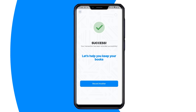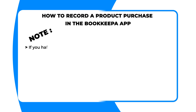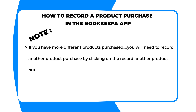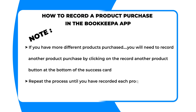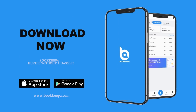Then click on the record purchase button at the bottom of the product purchase card. Finally, you will see a success message confirming that your product purchase transaction has been recorded successfully. Please note, if you have multiple different products purchased, you will need to record another product purchase by clicking on the record another product button at the bottom of the success card. Repeat the process until you have recorded each product purchase individually. Thank you. For more details on Bookkeeper, visit bookkeeper.com.